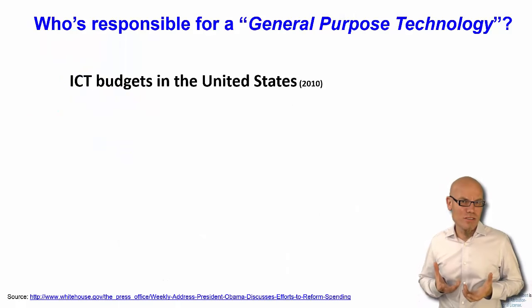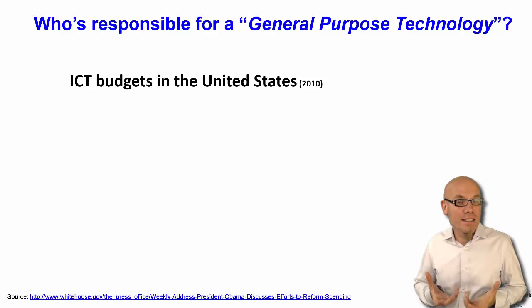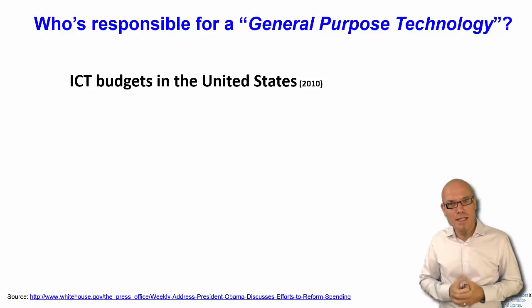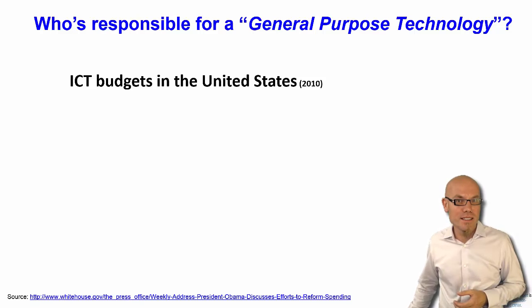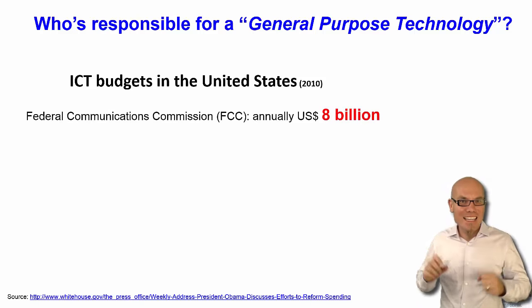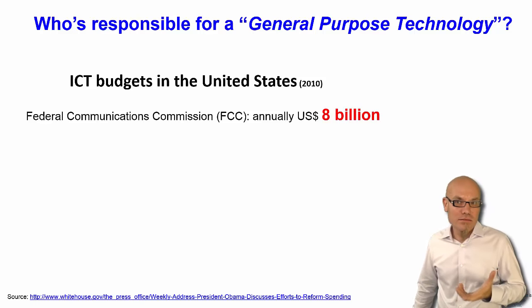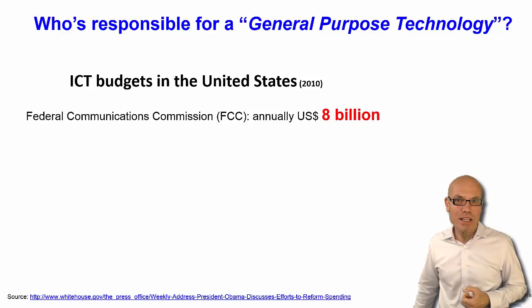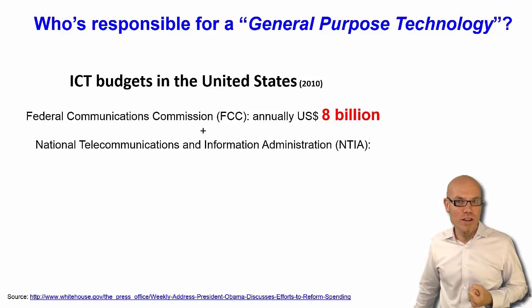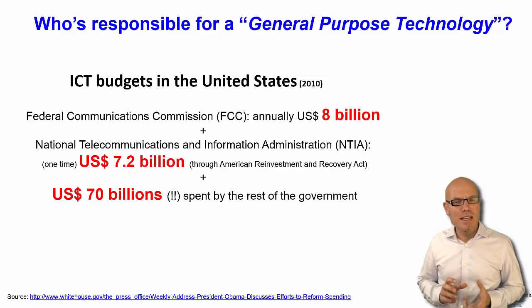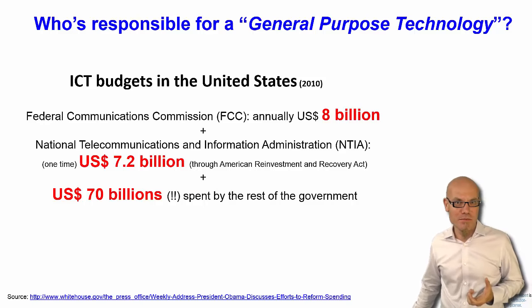The decentralized nature of ICT policy making — because of the general-purpose technology nature of digital technologies — can also be seen in the ICT budget of the United States. The Federal Communications Commission, the FCC, had a budget of about $8 billion annually, and another telecommunication authority had an equivalently powerful budget of $7 billion. But the rest of the federal government spent over $70 billion — about ten times as much.